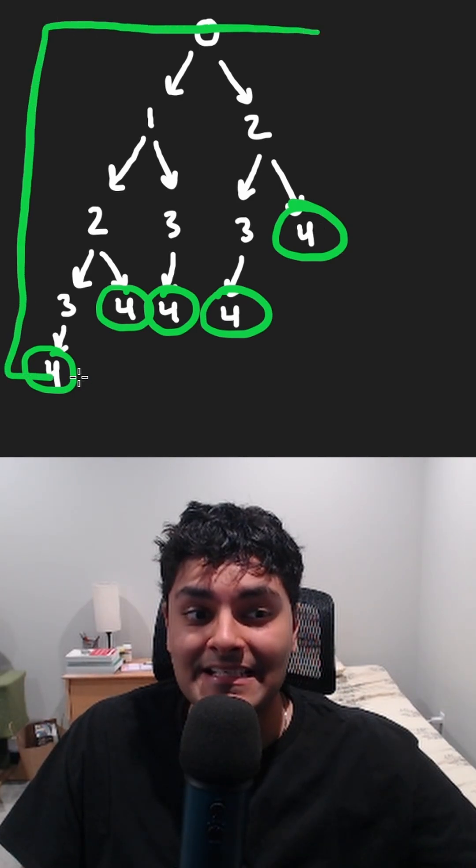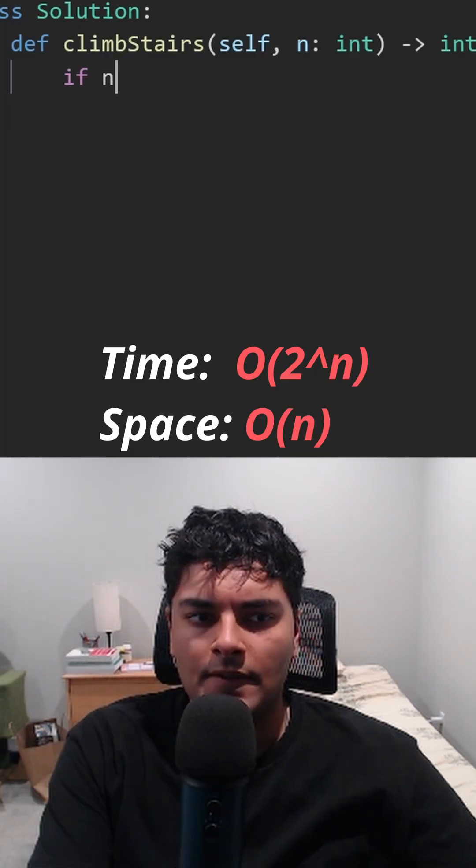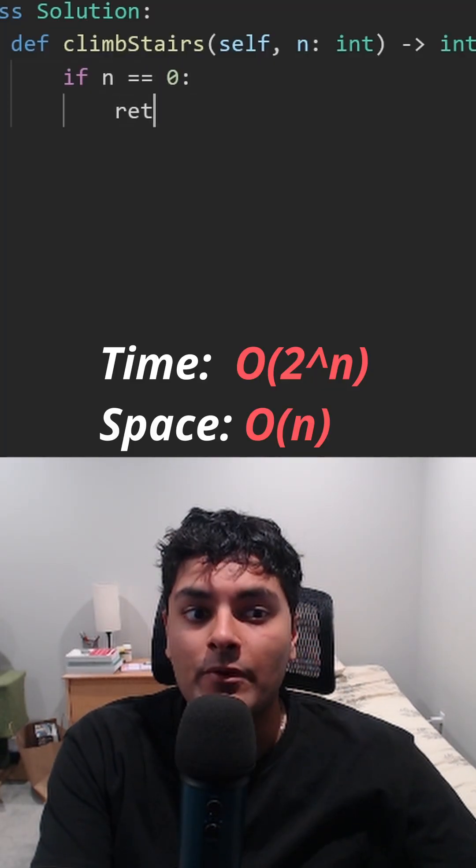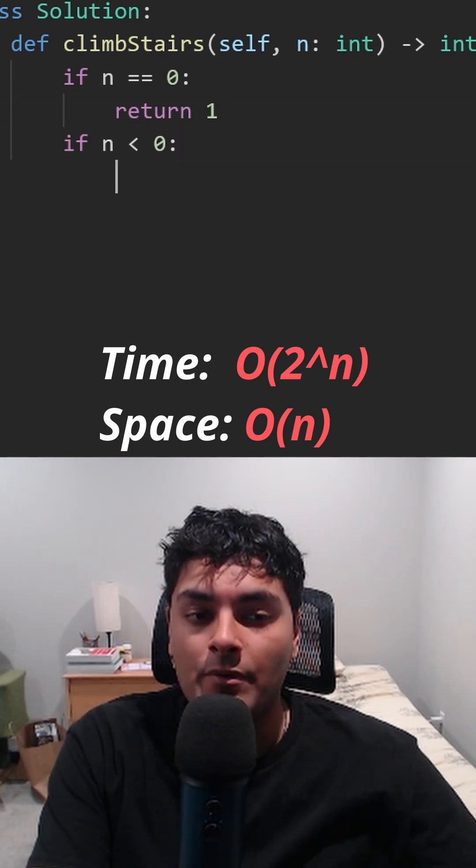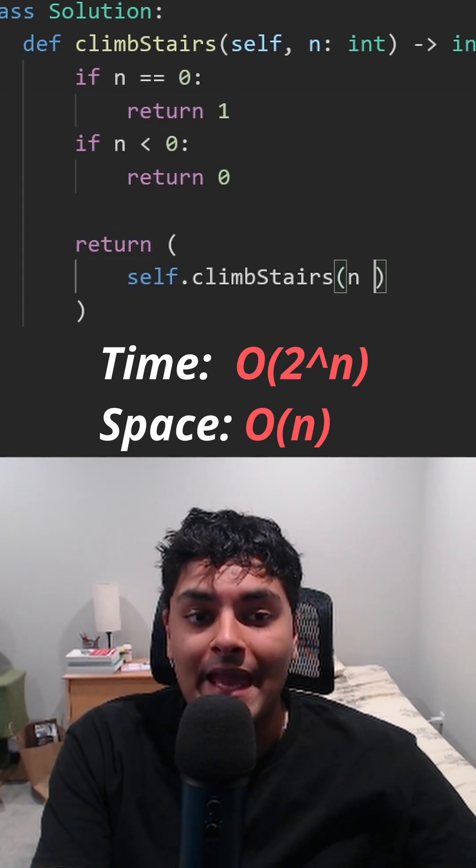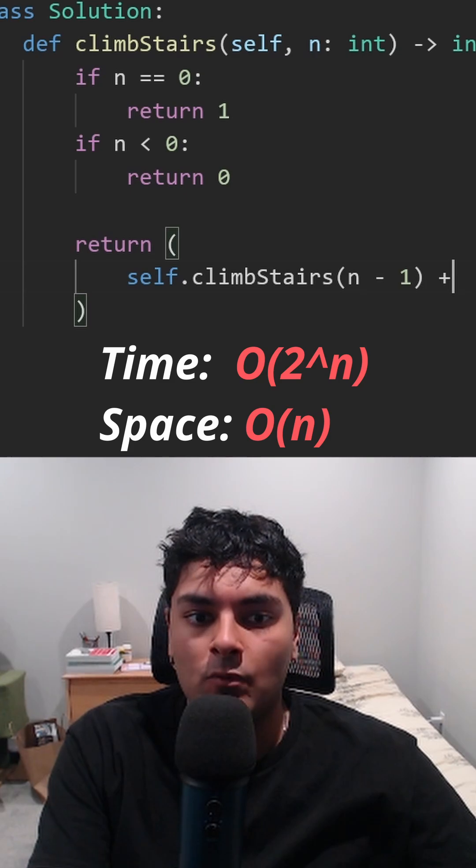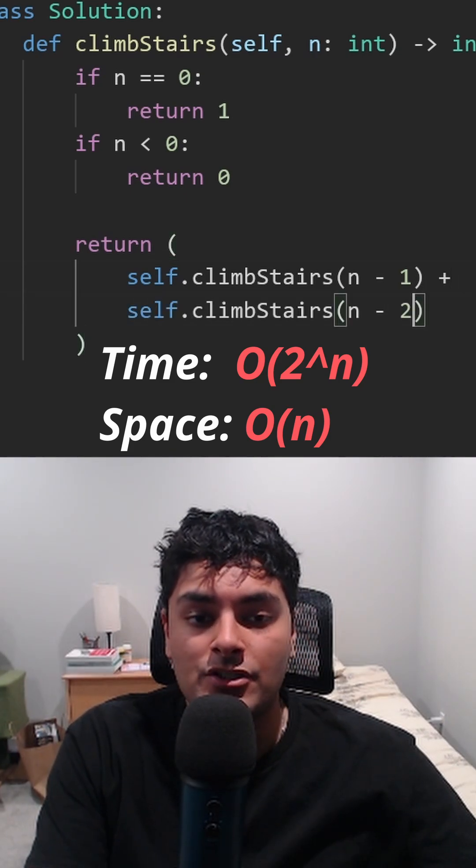We can take this idea and code up a recursive solution. If there are zero steps remaining, then we were able to reach the top. If n is ever less than zero, we probably went too far. Otherwise, n minus one, that's when we take one step. Also, n minus two.